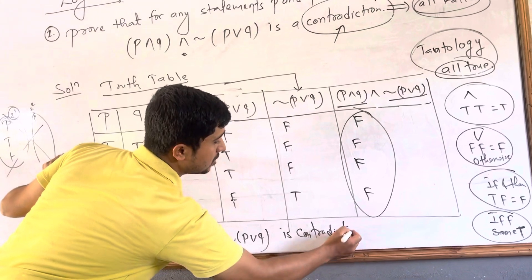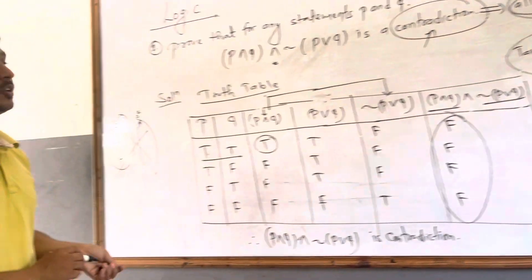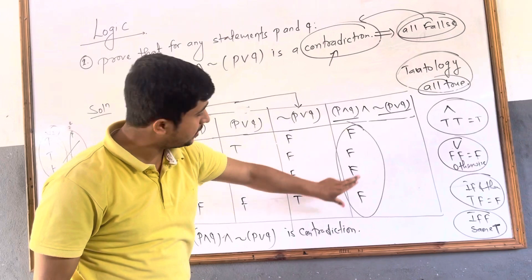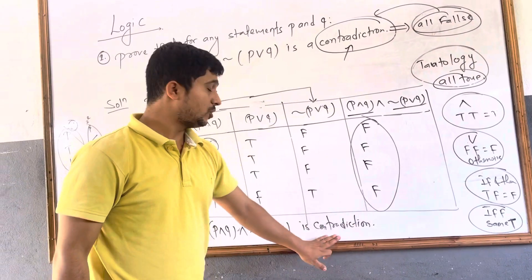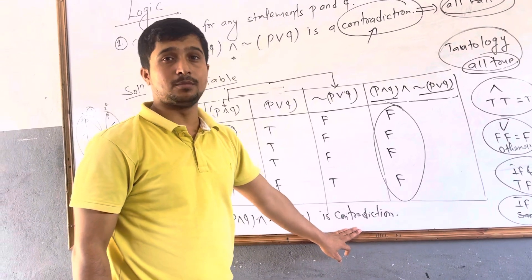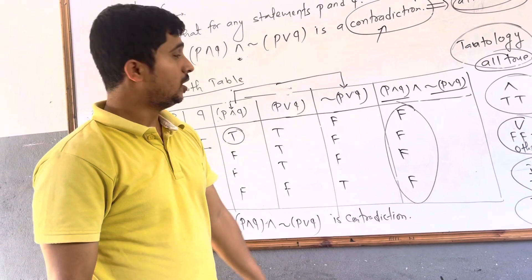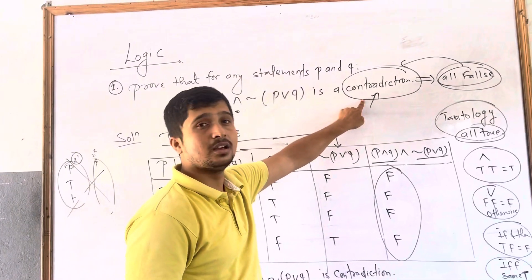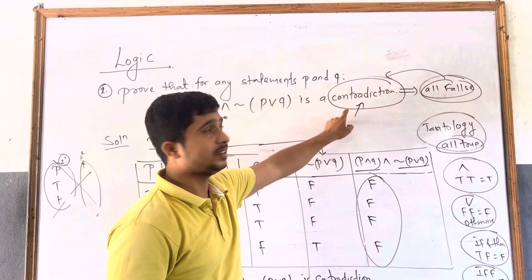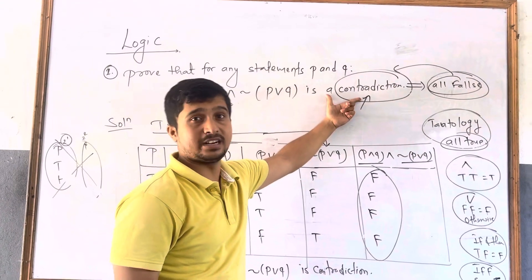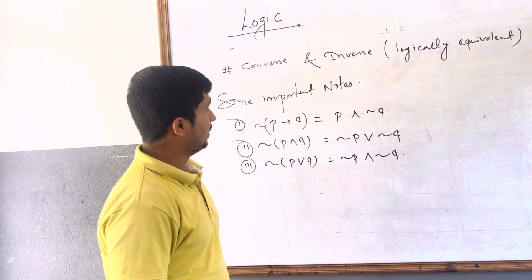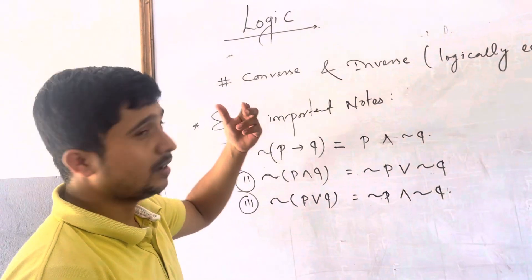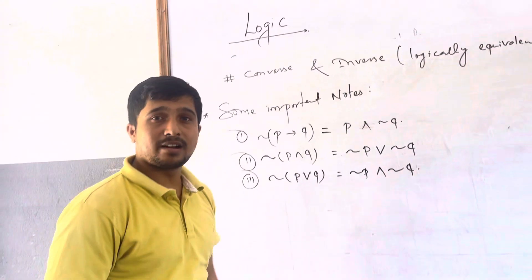Therefore, at the end, P and Q intersected with negation of P or Q is a contradiction — all false. All false means contradiction, all true means tautology. This statement is a contradiction.